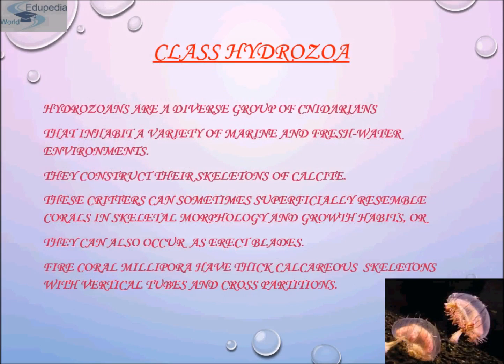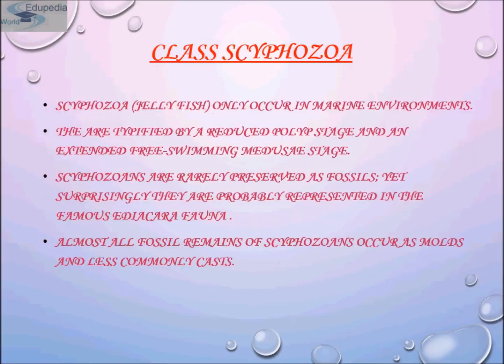The second group is class Hydrozoa. Hydrozoa are a diverse group of cnidarians that inhabit a variety of marine and freshwater environments. They construct their skeletons of calcite and can sometimes superficially resemble corals in skeletal morphology and growth habits, or they can also occur as erect blades. An example is fire coral, Millepora, which has thick calcareous skeletons with vertical tubes and cross partitions. This is the representation of class Hydrozoa.